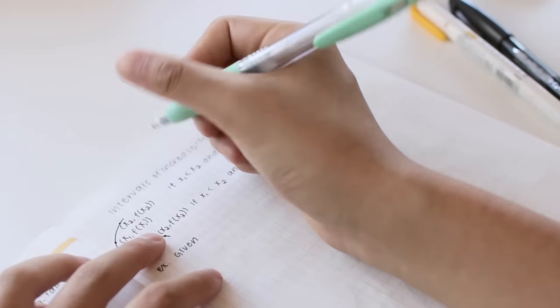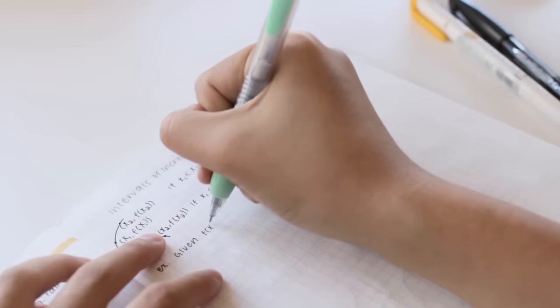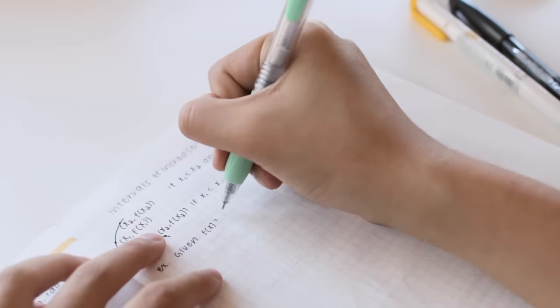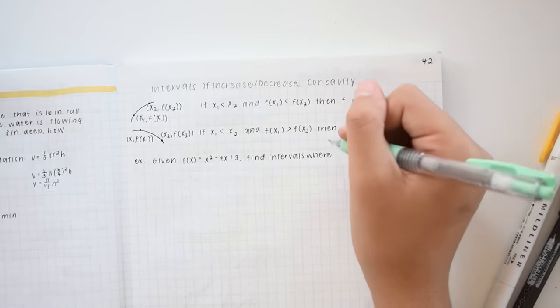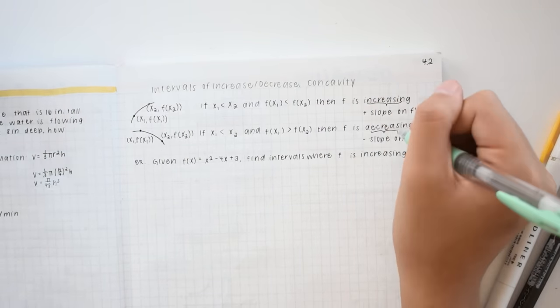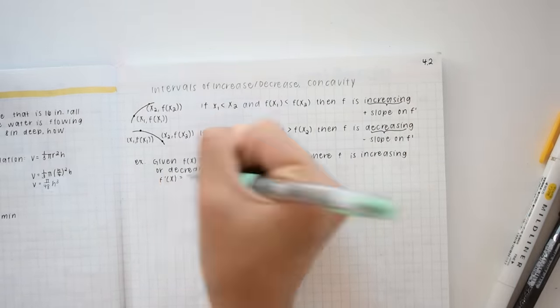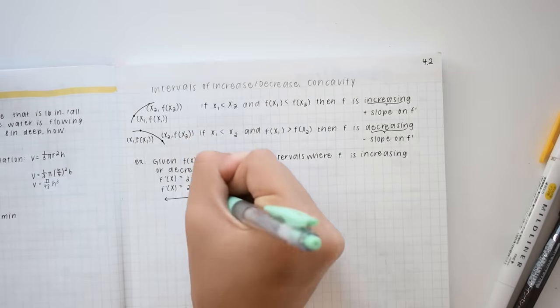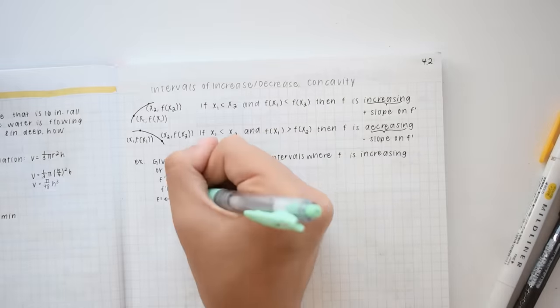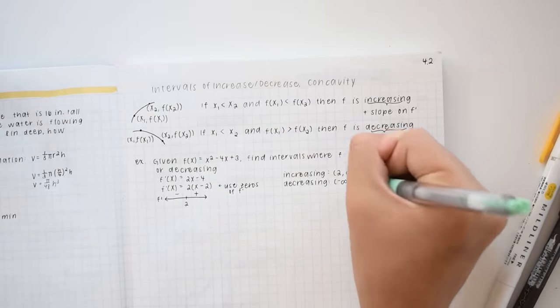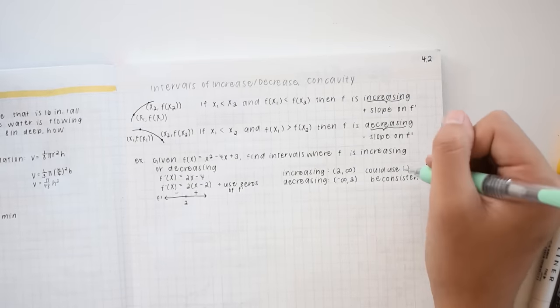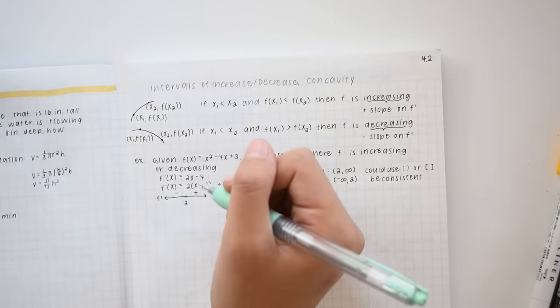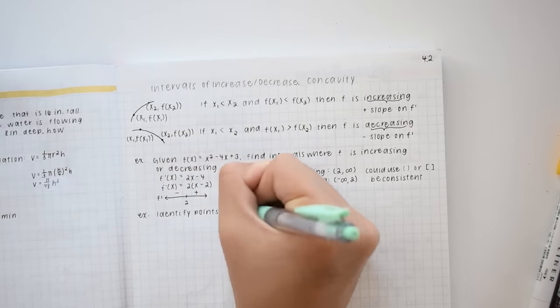After we have all of our necessary background information, we move on to doing examples. Usually for the first few, the teacher will show all of the steps on the board and explain each one as we go. If there's a particular step that I don't understand intuitively, I'll write a little note on the side that explains why certain things are happening. Or if I need any additional formulas or background information, I will write it next to the example as well.